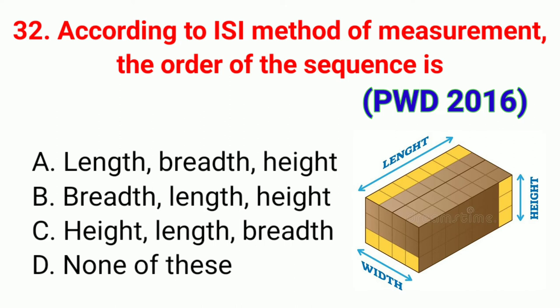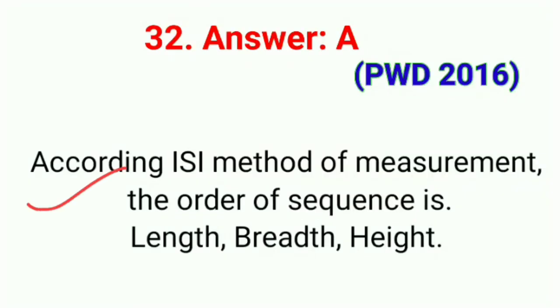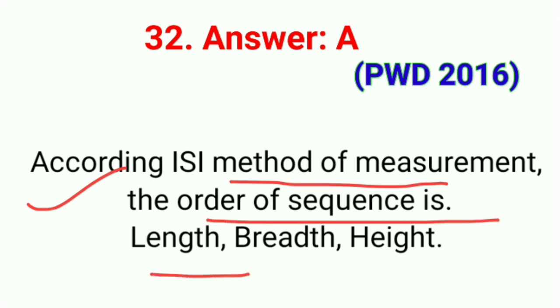Question number thirty-two: According to the ISI method of measurement, the order of sequence is. The correct answer is option A: length, breadth or height. According to the ISI method of measurement, the order of sequence is length, breadth or height.